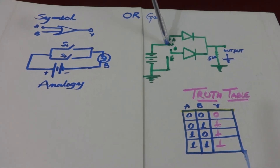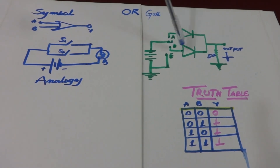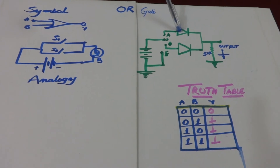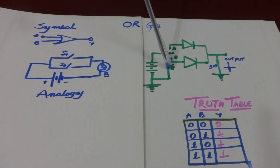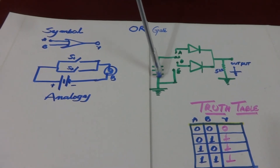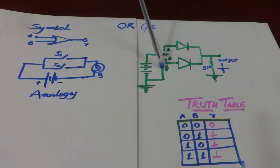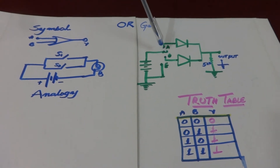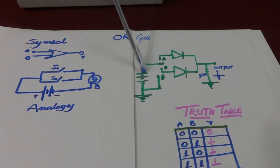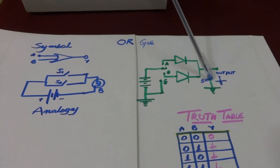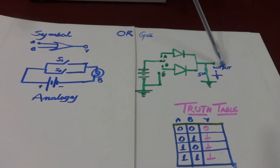In this circuit arrangement, if A and B are connected to the positive terminal, both diodes are in forward bias and they conduct, giving an output across the load resistance. If either A or B is connected to the negative terminal E, the corresponding diode will not conduct. When both A and B are connected to the positive terminal, both diodes conduct and current passes through, producing a potential difference across the load resistance as output.